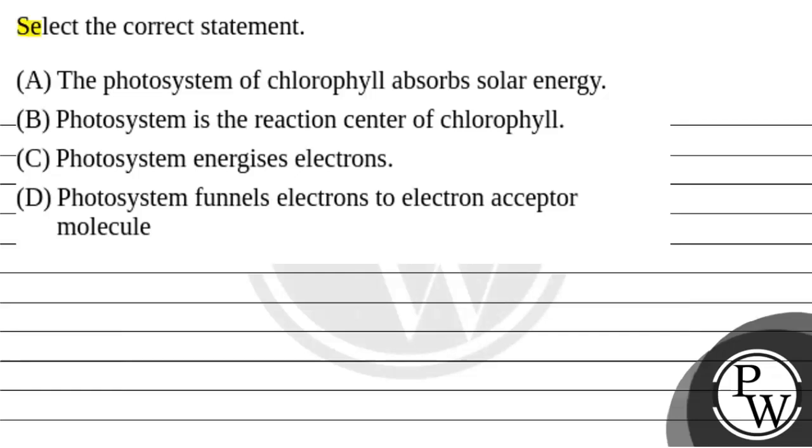Hello guys, let's read the question. The question says select the correct statement. First statement is the photosystem of chlorophyll absorbs solar energy. Second, photosystem is the reaction center of the chlorophyll. Third, photosystem energizes electrons. Fourth, photosystem funnels electrons to the electron acceptor molecule.